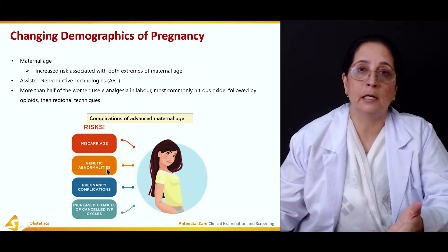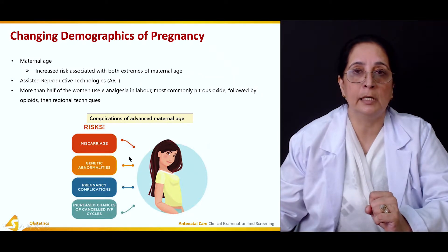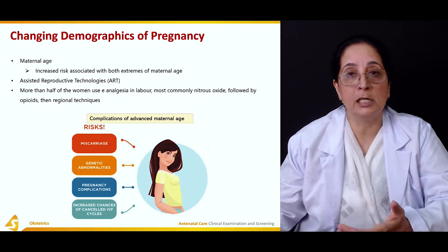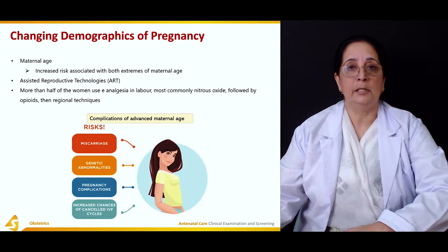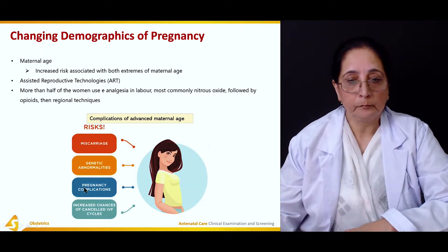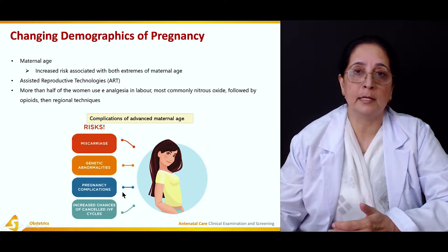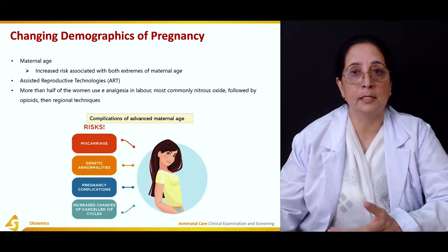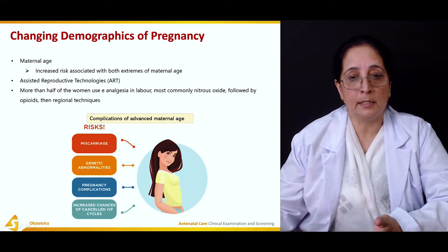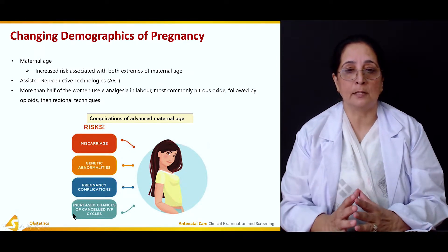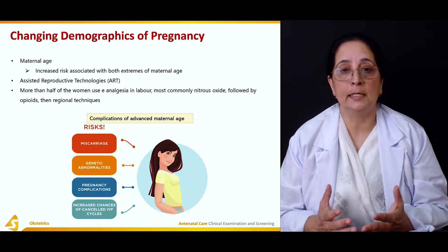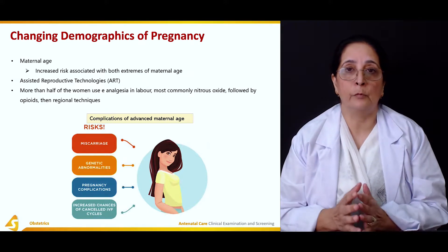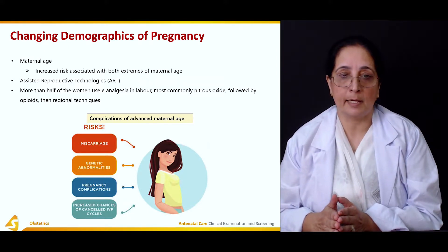The complications associated with advanced maternal age include miscarriages, which are common especially after 35, and genetic abnormalities such as Down syndrome, which is very common after 35 to 40 years of age. Other complications include placenta previa, abruptio placentae, chromosomal abnormalities, and increased need for assisted fertility procedures like in vitro fertilization, with a higher failure rate at advanced maternal age.